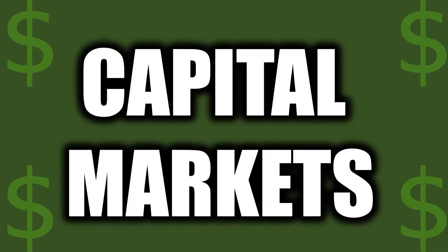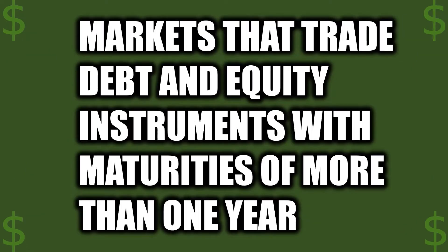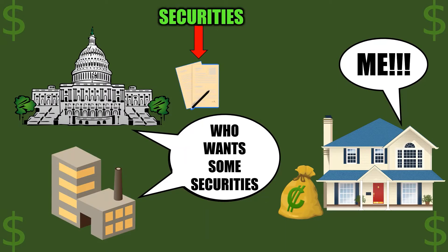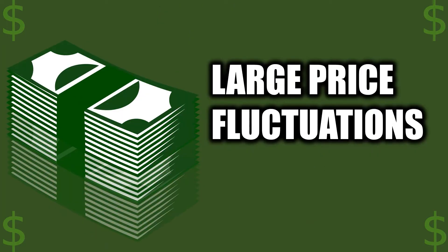First up is Capital Markets. Capital markets are markets that trade debt and equity instruments with maturities of more than one year. This is a little similar to money markets from Part 1, except their maturities are short term, lasting one year or less, and don't trade equity. In these capital markets, usually corporations and governments issue securities and usually households provide funds in return. Due to the long-term nature of these securities being traded, capital market securities have higher price fluctuations than money market securities. For instance, long-term securities have greater price fluctuations in interest rates than short-term securities.